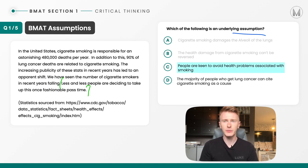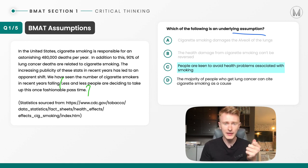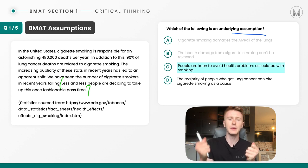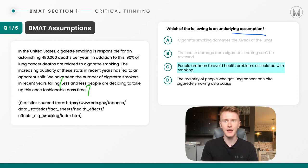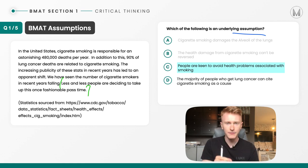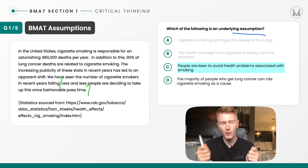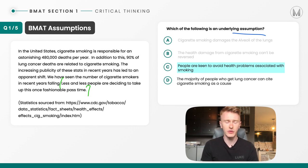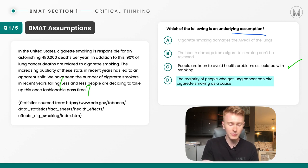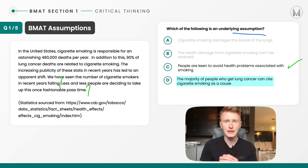C — people are keen to avoid health problems associated with smoking. This is the assumption. It's talking about health problems and the publicity of those statistics, and the conclusion is more people are going away from smoking. The unstated link is that people are keen to avoid those health-damaging effects. D — the majority of people who get lung cancer can cite cigarette smoking as a cause. That's not an assumption because it specifically states that 90% of those deaths are related to cigarette smoking. So C is the correct answer.